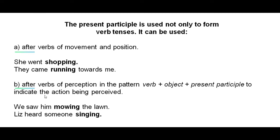After verbs of perception in the pattern of verb plus object plus present participle to indicate the action being perceived, as in the examples below. We saw him mowing the lawn. Verb: saw, object: him, present participle: mowing. Liz heard someone singing. Verb, object, present participle.